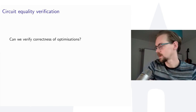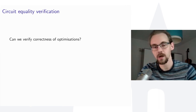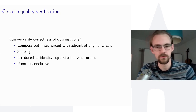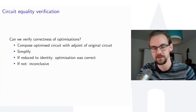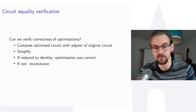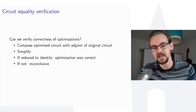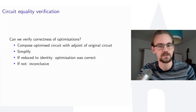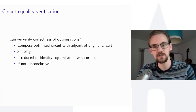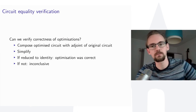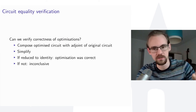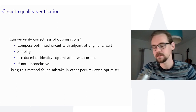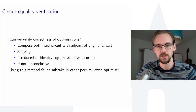For equality verification of optimizations: take the optimized circuit, compose it with the adjoint of the original circuit, and simplify. If the optimization was correct, the result should be the identity. If it reduces to the identity, there is strong evidence the optimization was correct; if not, it's inconclusive. This runs in polynomial time despite being a QMA-hard problem in general, because the greedy simplification takes a very different path through diagram space than the optimization did, making it unlikely that an error would cancel itself. Using this method, we actually found a mistake in another peer-reviewed circuit optimizer.